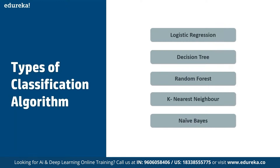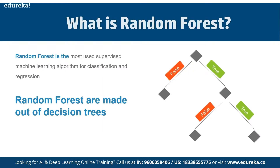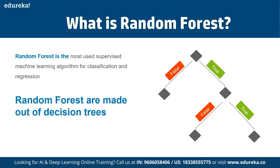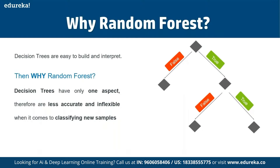Types of classification algorithms include logistic regression, decision tree, random forest, k-nearest neighbors, and Naive Bayes. Random forest is a supervised classification and regression algorithm. As the name suggests, it randomly creates a forest with several trees. The more trees in the forest, the more robust the forest — similarly, the higher the number of trees, the greater the accuracy. In simple terms, random forest builds multiple decision trees and combines them for a more accurate and stable prediction, trained using the bagging method.